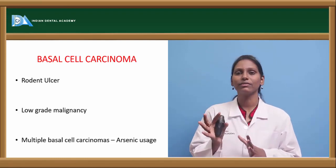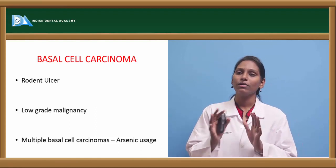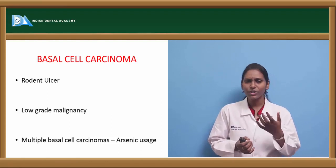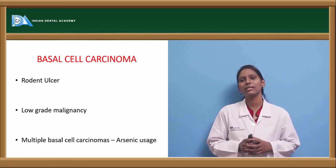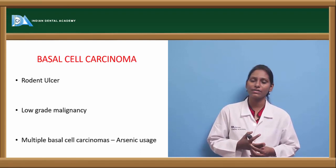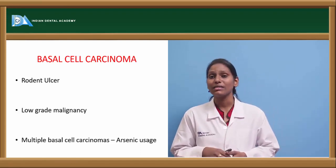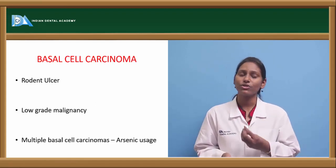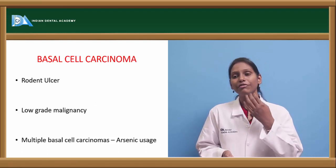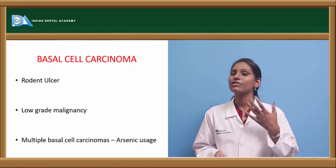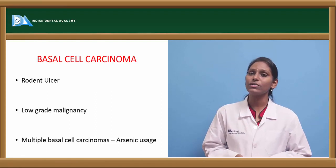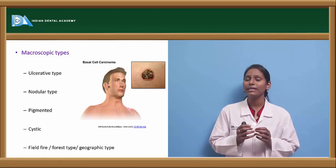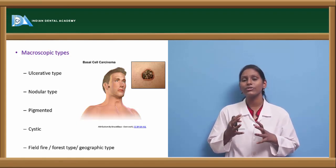It almost takes years to completely involve a particular part of the skin. These basal cell carcinomas — we can see both solitary and multiple basal cell carcinomas. Multiple basal cell carcinomas are especially seen in people who are exposed to arsenic, which is usually present in skin ointments. If the patient is exposed to arsenic for a long period of time, we can also see basal cell carcinomas. This tumor is known to occur in areas where people are exposed to bright sunlight.